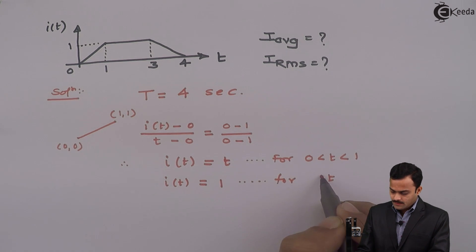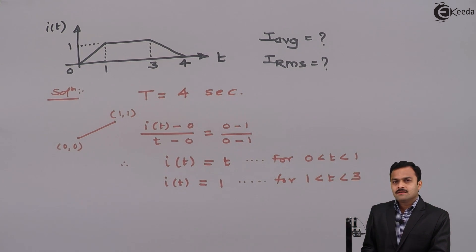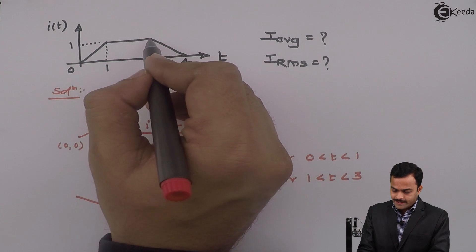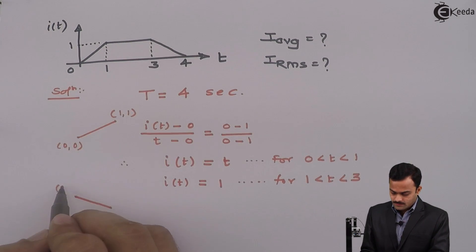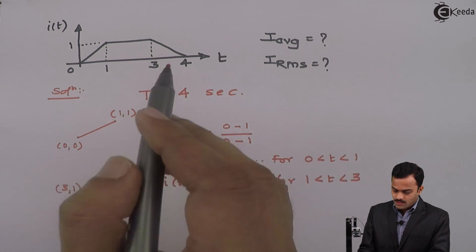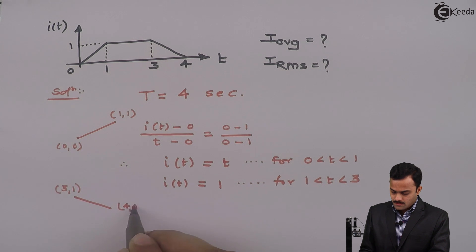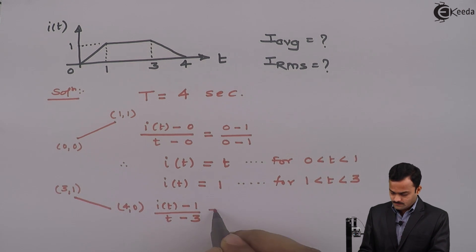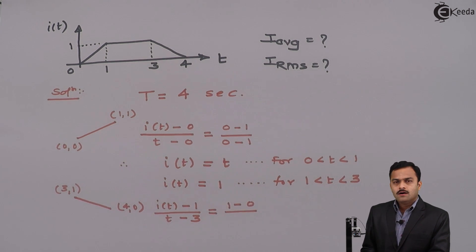The second part: the waveform remains constant with a value of 1 between t = 1 and t = 3, so i(t) = 1 for t between 1 and 3. The third part is a decreasing slope, and again there are two points whose coordinates are (3, 1) and (4, 0).